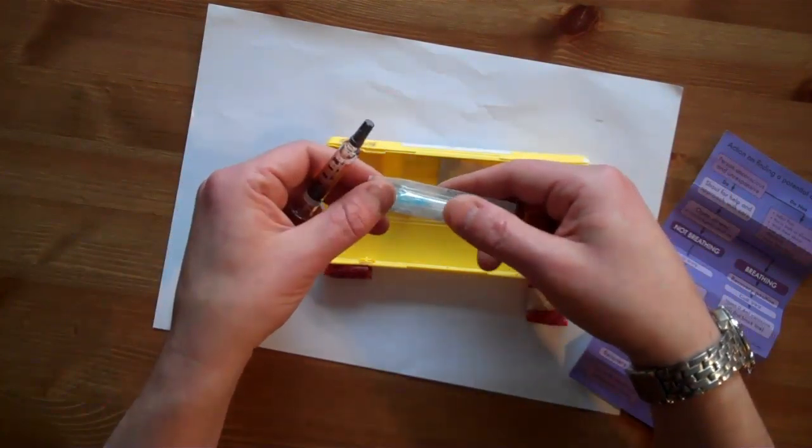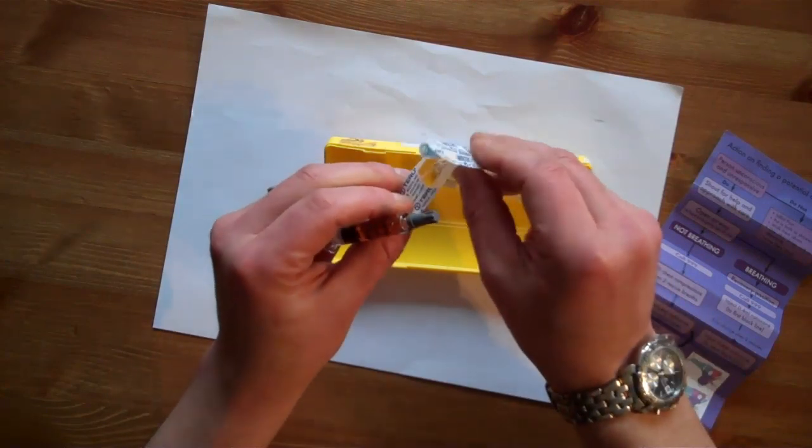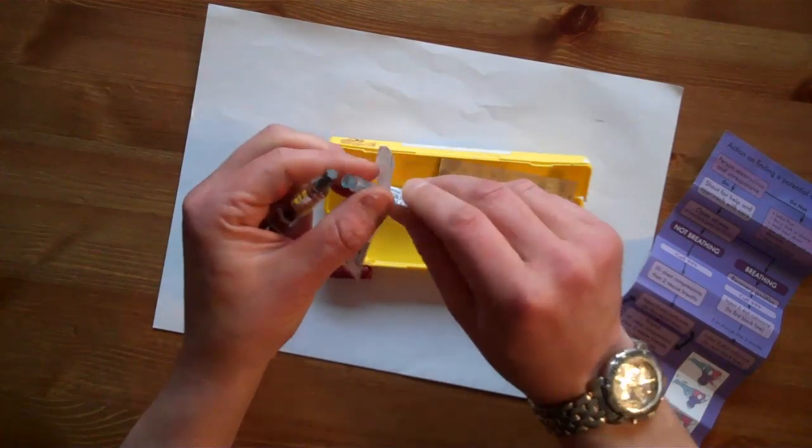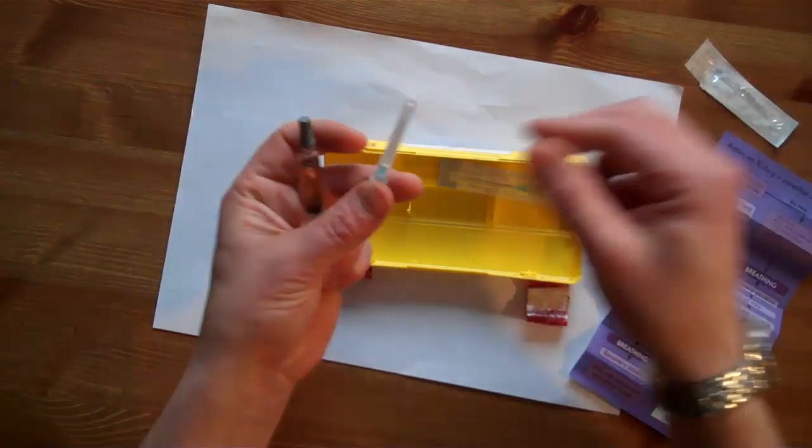First, we push through the paper end of the muscle needle packet and take out the still sheathed muscle needle.